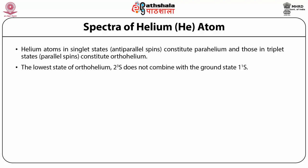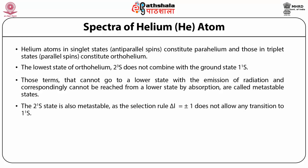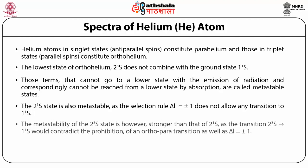Helium atoms in singlet states with anti-parallel spins constitute parahelium, and those in triplet states with parallel spins constitute orthohelium. The lowest state of orthohelium, 2³S, does not combine with the ground state 1¹S. Terms that cannot go to a lower state by emission of radiation, and correspondingly cannot be reached from a lower state by absorption, are called metastable states. The 2¹S state is also metastable as the selection rule ΔL = ±1 does not allow any transition to 1¹S. The metastability of 2³S is stronger, as a transition to 1¹S would violate both the ortho-para prohibition and ΔL = ±1.